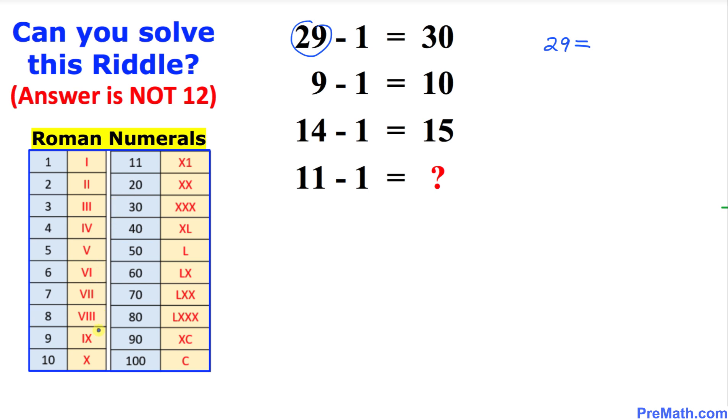29 is 20, which is two X's, and then 9 is IX. I can write down XXIX. Likewise, 1 could be written as simply I. Just keep that in mind.